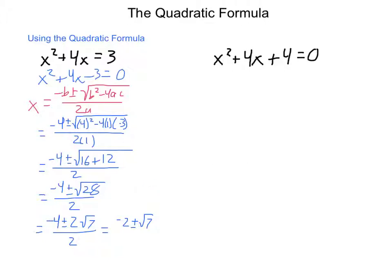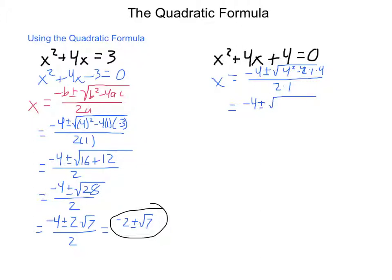So our full and complete answer is negative 2 plus or minus the square root of 7, since 4 divided by 2 is 2 and 2 divided by 2 is 1. Now let's try our second equation: x squared plus 4x plus 4 equals 0. Using the quadratic formula, x equals negative 4 plus or minus the square root of 4 squared minus 4 times 1 times 4, all divided by 2 times 1. This equals negative 4 plus or minus the square root of 16 minus 16, divided by 2. Since 4 times 1 times 4 is 16, we get the square root of 0, so the answer is simply negative 2.